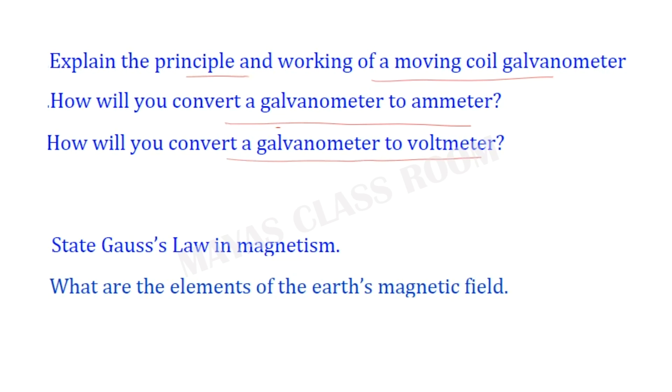The next question: state Gauss's law in magnetism. Important is what are the elements of the earth's magnetic field — we are learning dip, declination, and horizontal intensity.